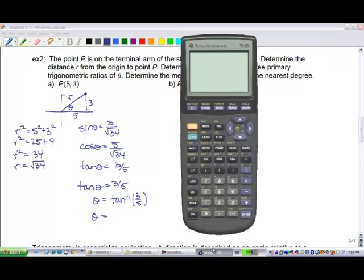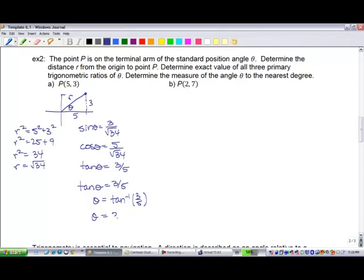We have second function tan of 3 divided by 5 and we get 30.96. They wanted it to the nearest 1 degree, so that's 31 degrees.